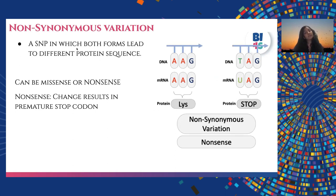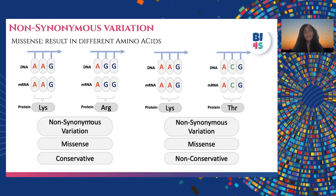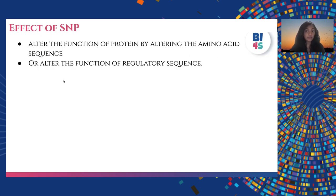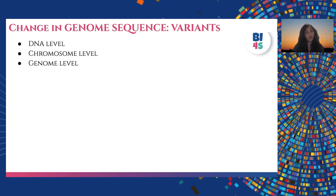Non-synonymous variations are those where both forms lead to a different protein. They can be of two types — missense or nonsense. A nonsense mutation results in a premature stop codon; for example, lysine (AAG) — if A is converted to T — becomes a stop codon, creating a premature protein. A missense mutation results in a different amino acid; for example, AAG becomes AGG, changing lysine to arginine, or lysine to threonine. The effect of an SNP can be to alter protein function by changing the amino acid sequence or altering regulatory sequences.